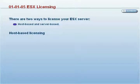The first way is called host-based licensing. When we do this licensing, we actually put the license file that we receive from VMware on the ESX server itself. So if we have multiple ESX servers, each of them is going to have its own license file. This license file tells the ESX server how many processors have been licensed. So if you've got a two-processor machine, you're going to need a license file for two processors.